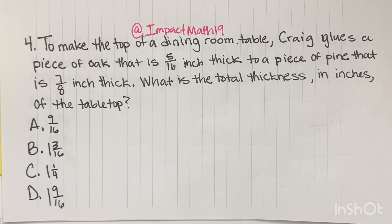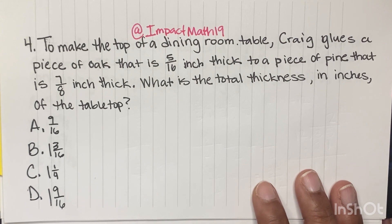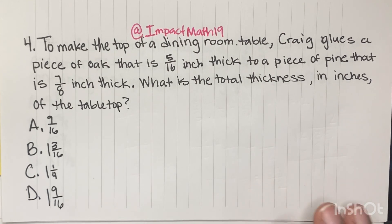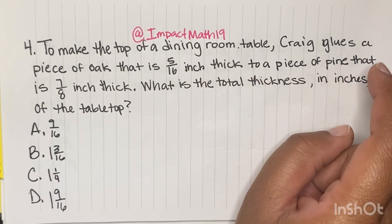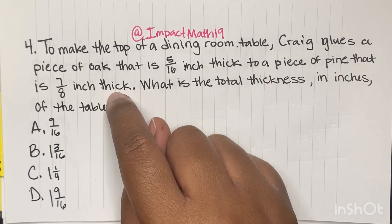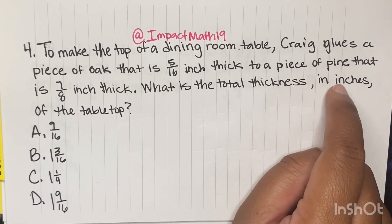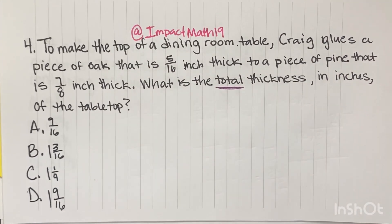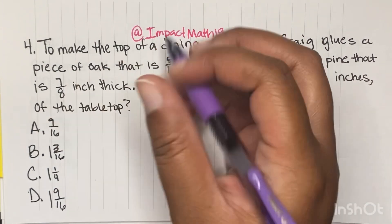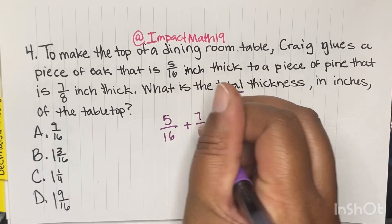Let's get into number 4. To make the top of a dining room table, Craig glues a piece of oak that is 5 sixteenths inch thick to a piece of pine that is 7 eighths inch thick. What is the total thickness in inches of the tabletop? The key word here is total, so we're going to add 5 sixteenths plus 7 eighths.